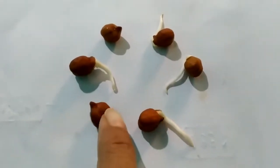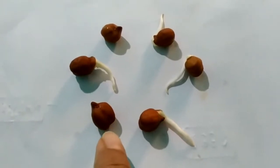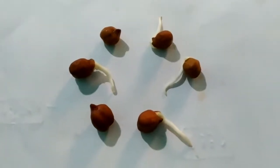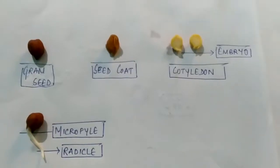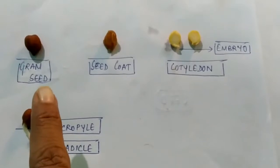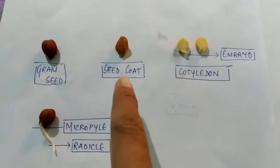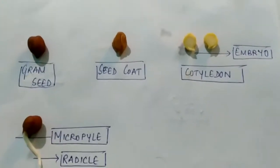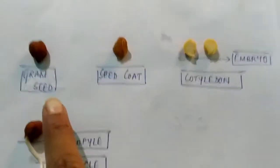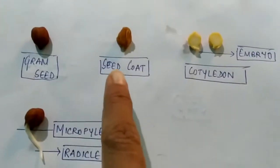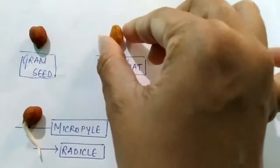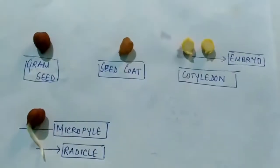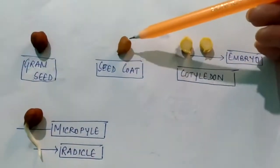Now I will be taking this seed and dissecting it so that you can understand the different parts. So give me one minute so that I can show you. Students, over here you can see the dissected parts of the gram are kept. This is the gram seed, and after dissecting the outermost portion I have got this, which is known as the seed coat — the testa and tegmen together.